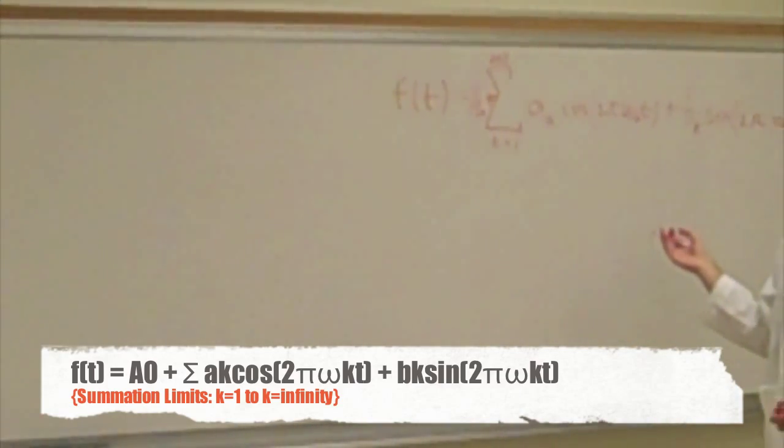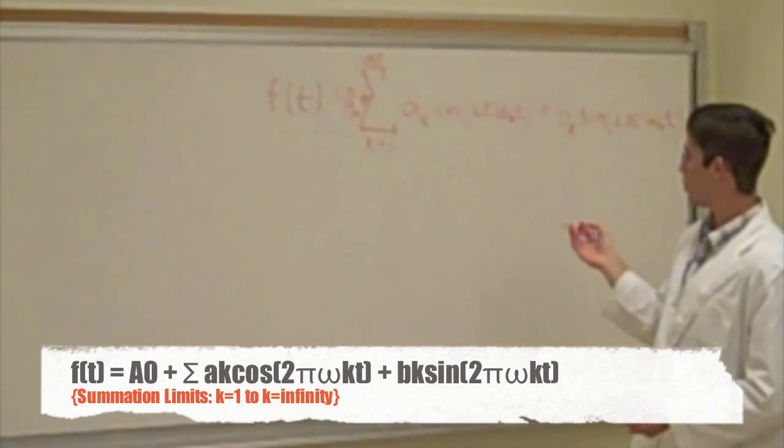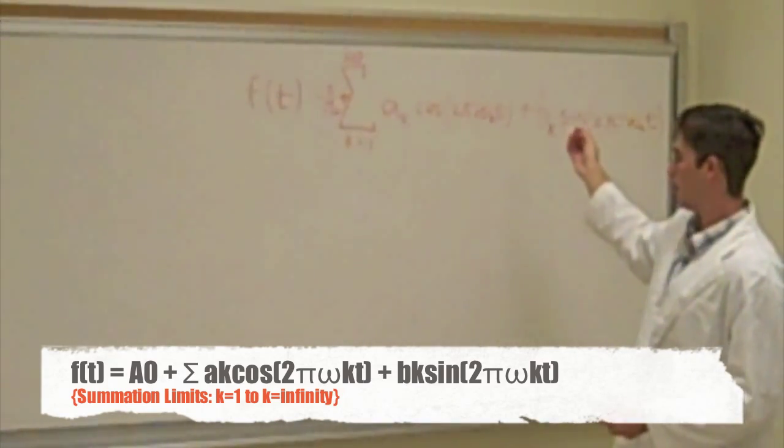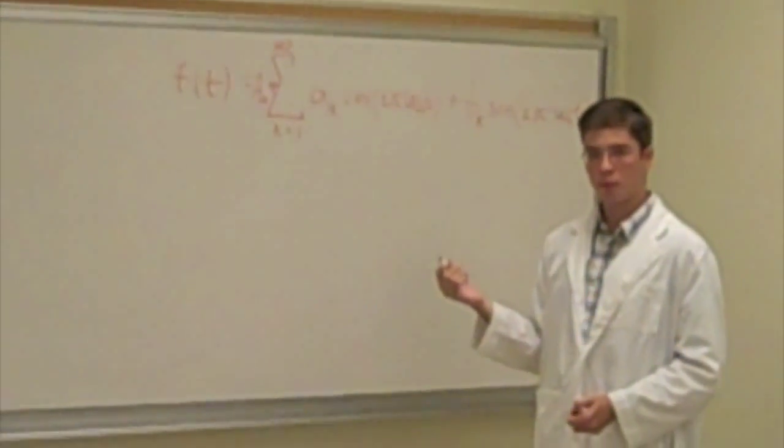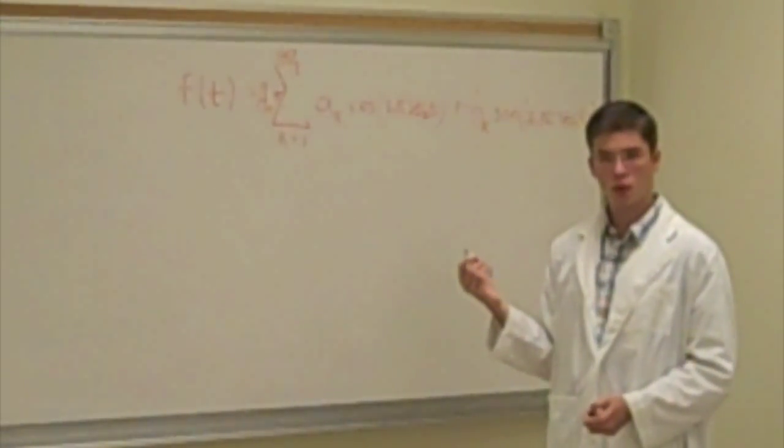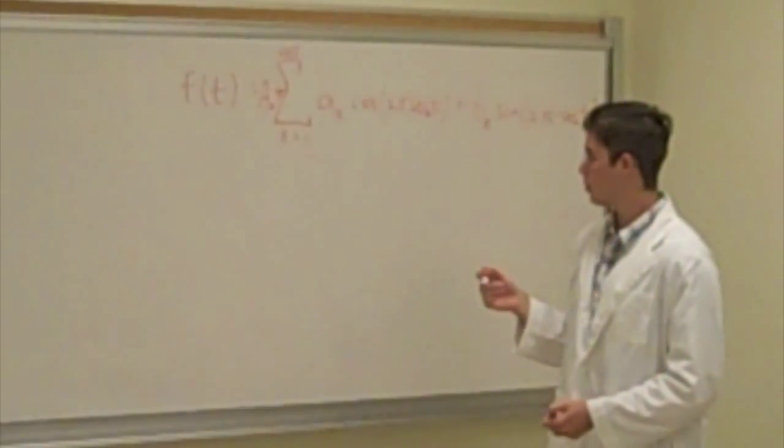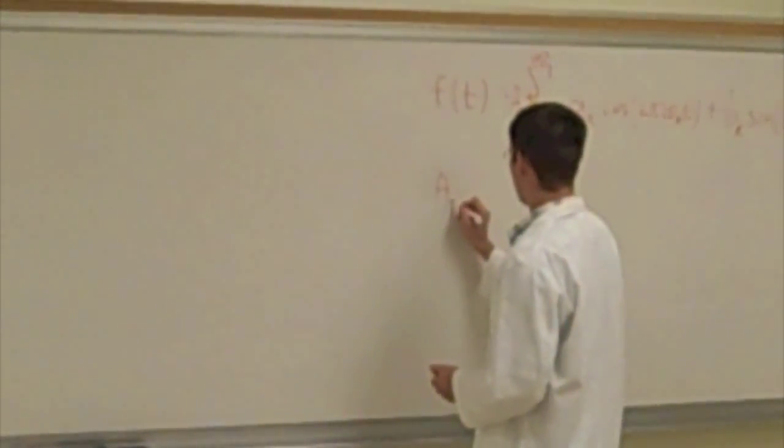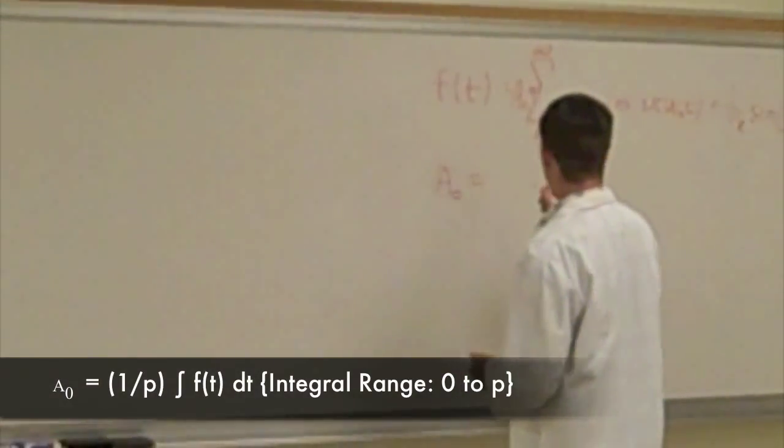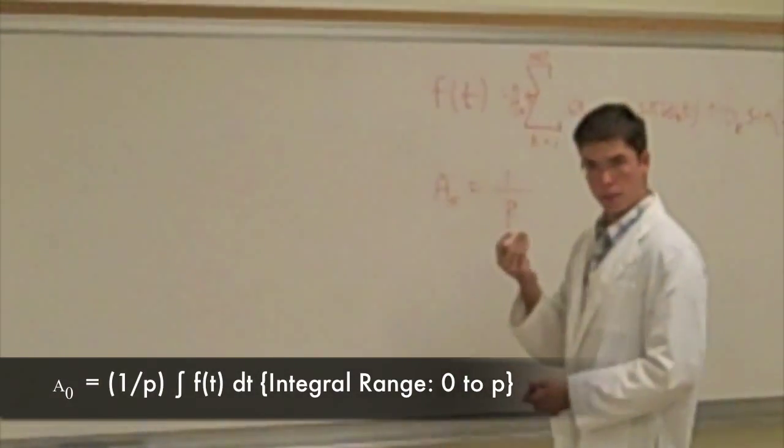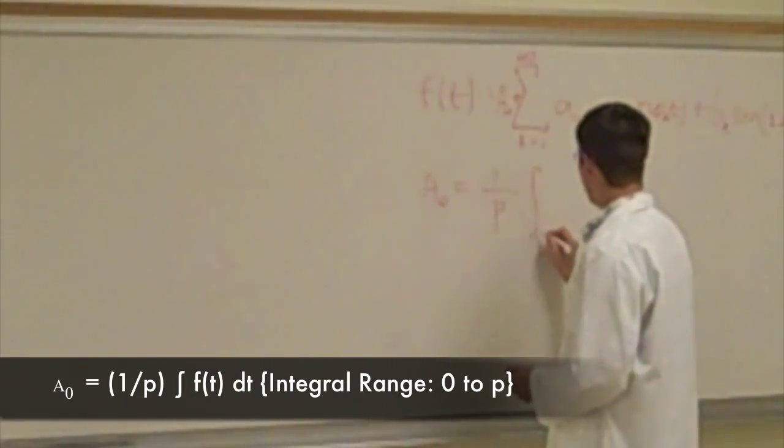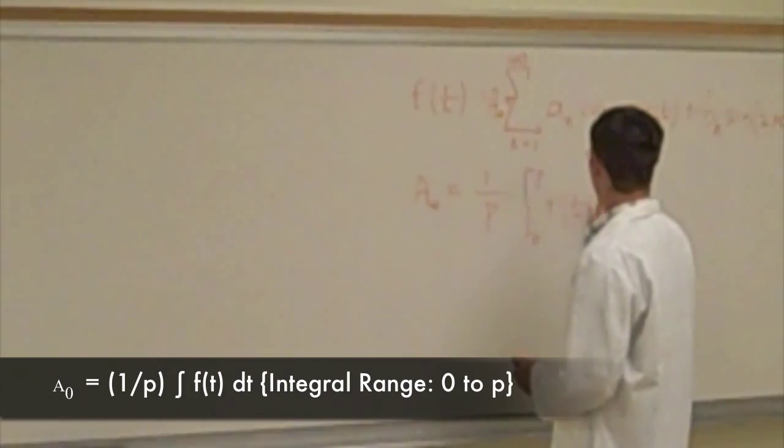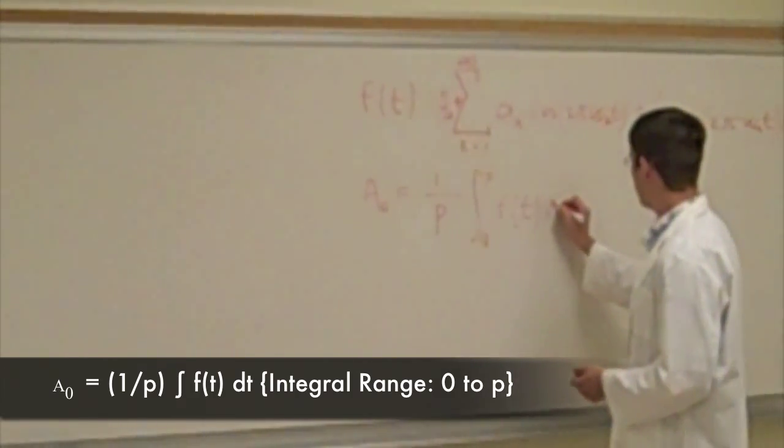So in this expression, we have three different constants: a naught, a sub k, and b sub k. And we wish to express what these constants look like mathematically. Mathematically, you can calculate them very easily. A naught is equal to 1 over p, where p is the period, of the integral from 0 to p of our function f of t dt.